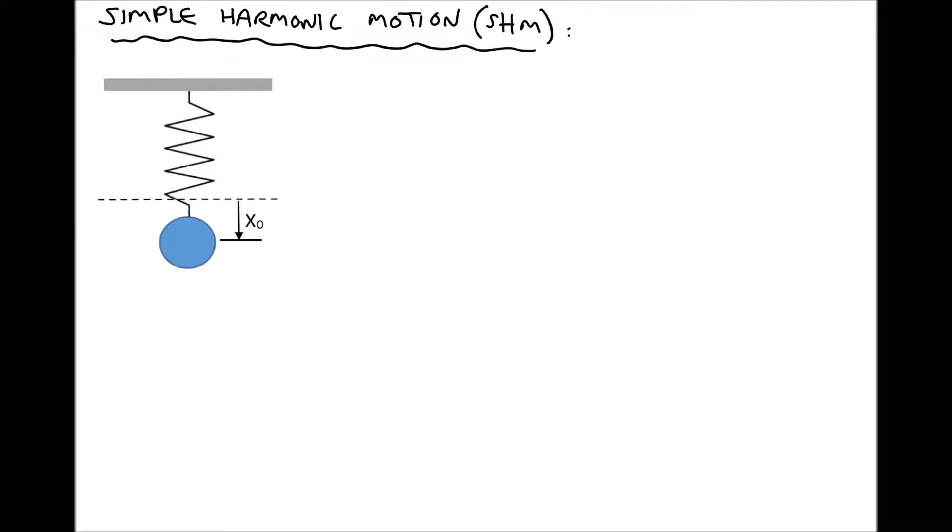Here we have a similar example of simple harmonic motion: we have a mass suspended on a spring, and before we displace that mass it's going to sit on the dashed centre line. Until we introduce a displacement to that system the mass is going to have a natural resting position. But when we displace the mass through a distance x0, an initial displacement, and release the mass, it's going to oscillate up and down past that centre line. Its displacement is going to change periodically, oscillating above and below the centre line.